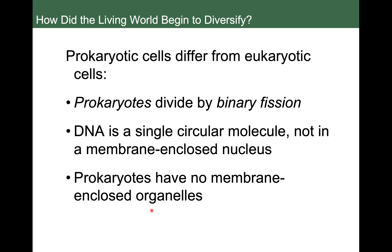There are some very significant differences between prokaryotic and eukaryotic cells. Prokaryotic cells divide by binary fission rather than mitosis. They usually have just a single circular chromosome rather than the multiple linear chromosomes found in eukaryotic cells. The DNA in prokaryotic cells is not found in a nucleus because prokaryotes lack all membrane-bound organelles — no nucleus, no ER, no Golgi, no mitochondria, no chloroplasts.